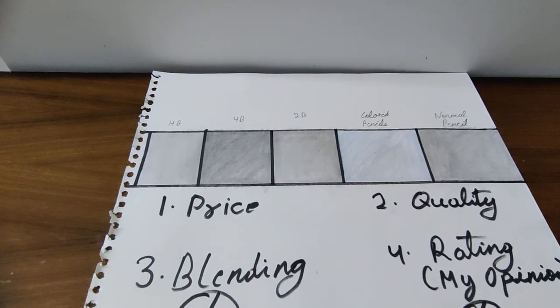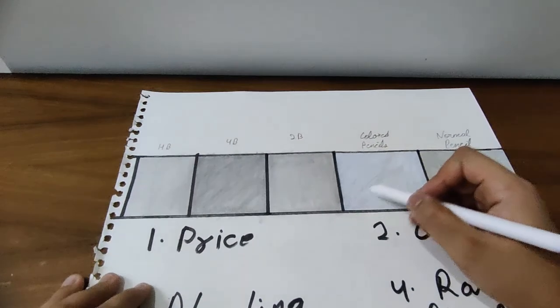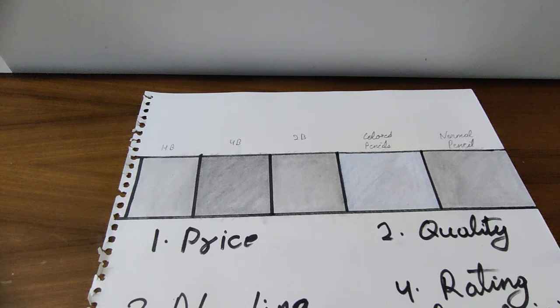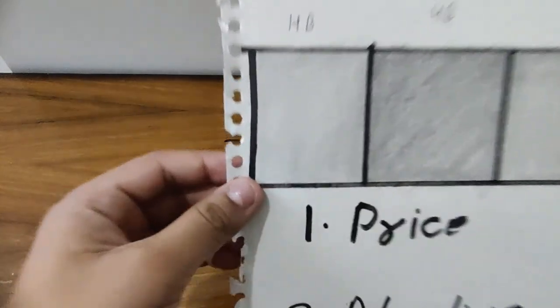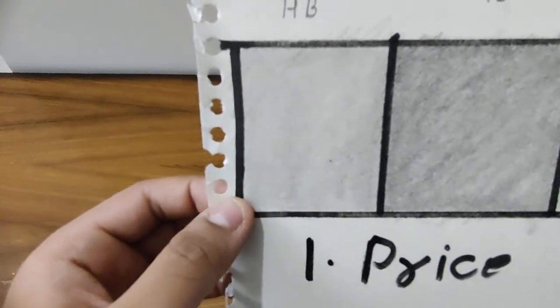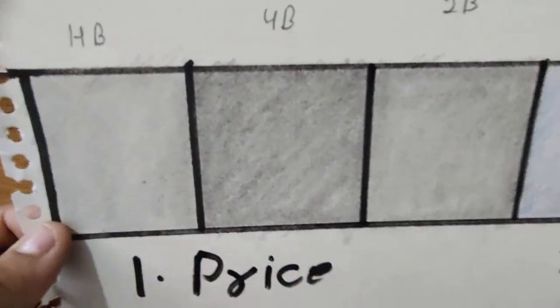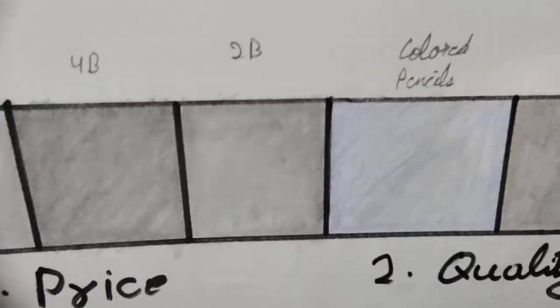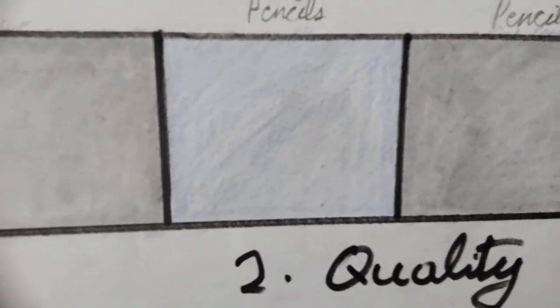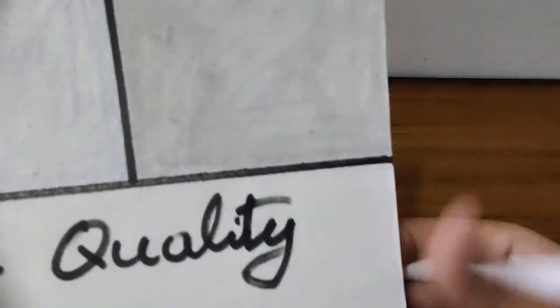Okay, so the color pencils also blended in quite well. They blended in alright. And as you can see, these are the results. This is HB. This is 4B. This is 2B. The color pencils. And the normal pencil.